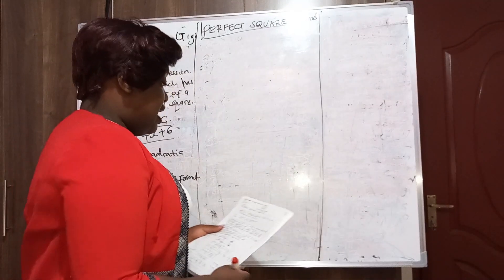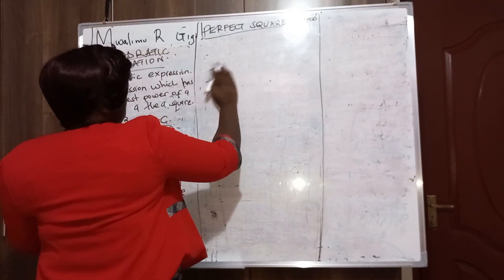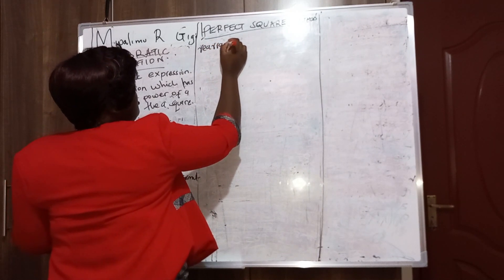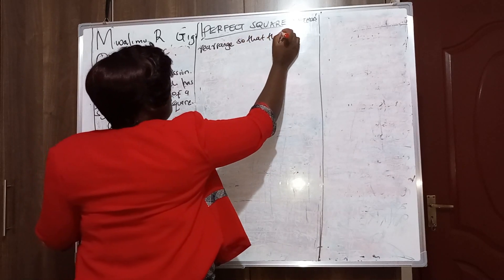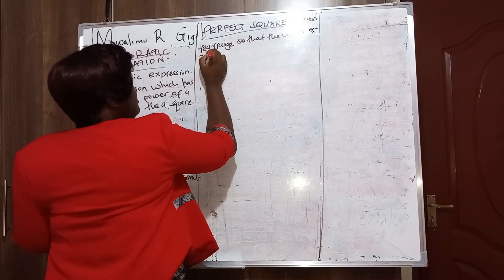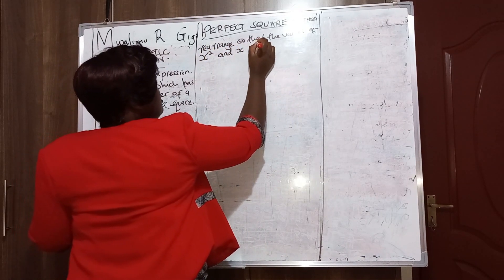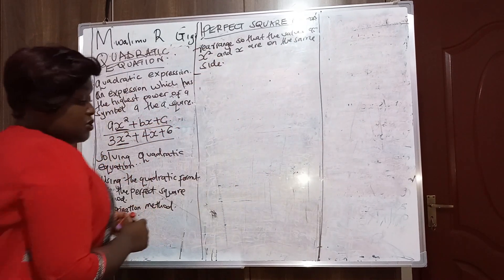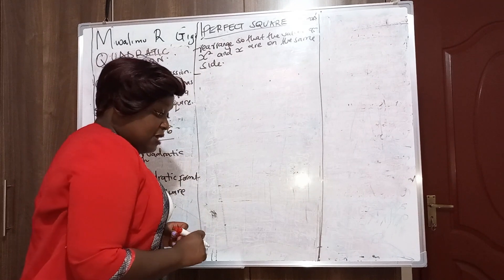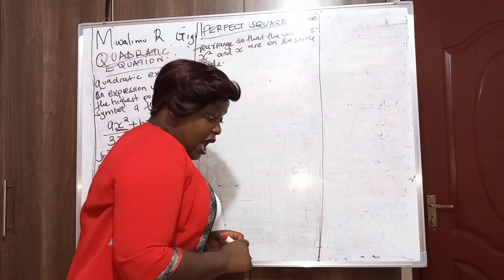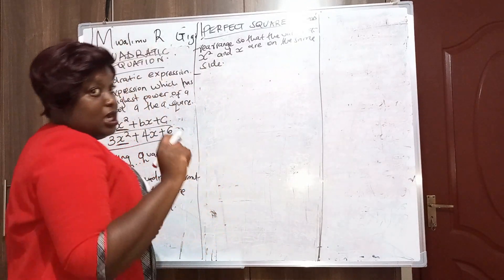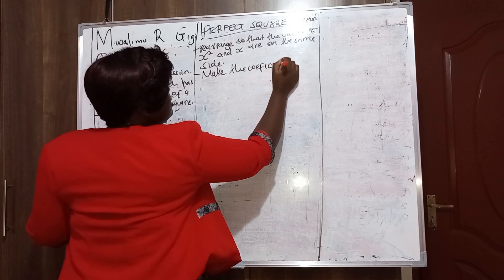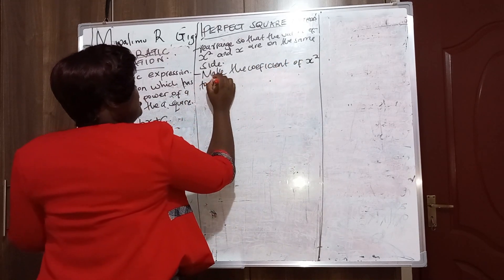The first step is to rearrange so that x squared and x are on the same side. Then make the coefficient of x squared to be 1.